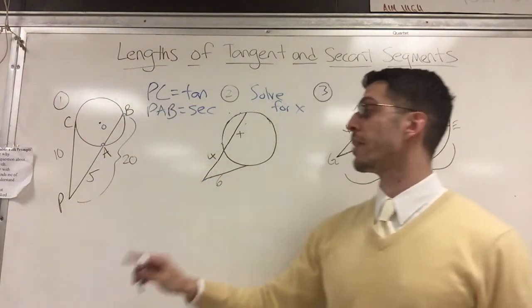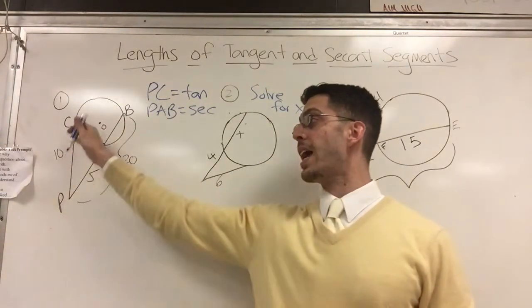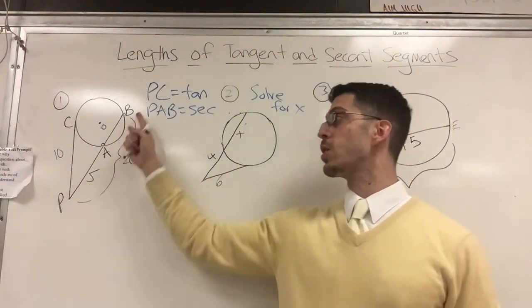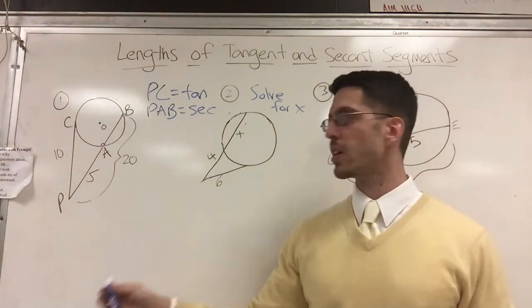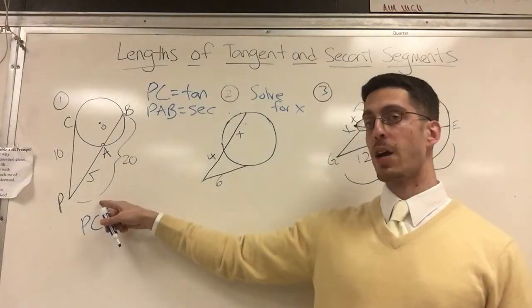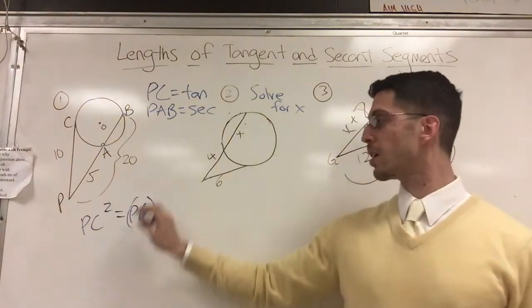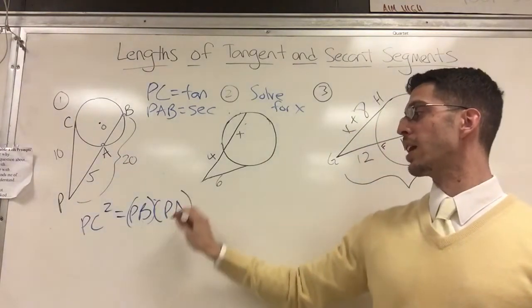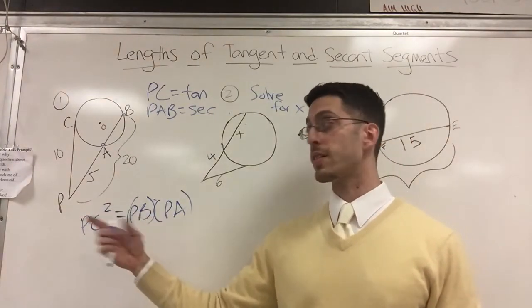Now there's a relationship between these two, and the relationship is: the tangent segment squared equals the entire secant segment times the external segment. What did I just say? PC squared equals the entire PB times PA. I don't recommend you memorize this formula because letters change, but understand the concept: tangent squared equals entire secant times external secant.